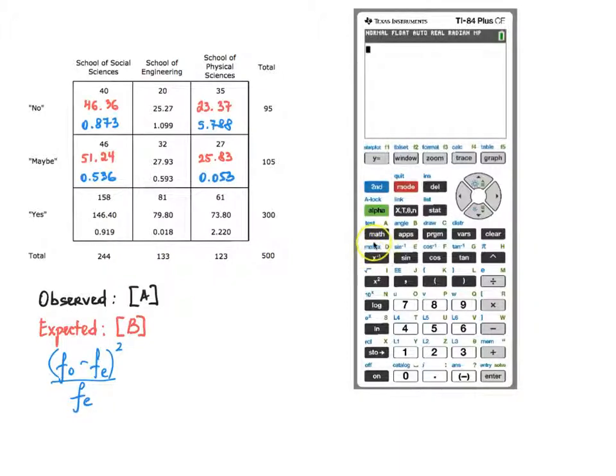To enter data into matrices, you need to use this function here and press second x to the negative first power to access that menu. Scroll to the right to edit your matrix to the appropriate size. This time we need a 3x3 matrix. Enter your observed values one at a time, pressing enter after each number. The calculator will fill numbers in one row at a time. When you are done entering data into your matrix A, observed data, run the test. Press test, scroll to chi-square test option C. Choose that option by pressing enter. And as you can see, observed are pre-programmed to be in matrix A. And expected values will show up in matrix B after you run this test. Press enter a few times until you get the result.